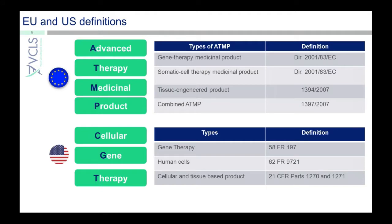For this audience, we will not spend too much time on definitions. However, to ensure that everyone is on the same page — and from the poll about 50% have a basic knowledge on ATMPs — we'll give a brief overview. In Europe, this therapeutic class is named ATMP, which stands for advanced therapy medicinal product. It involves four types: gene therapy medicinal product, somatic cell therapy, tissue engineered, and combined ATMP.